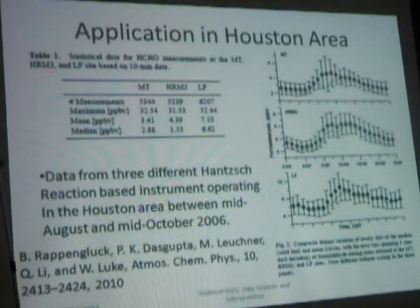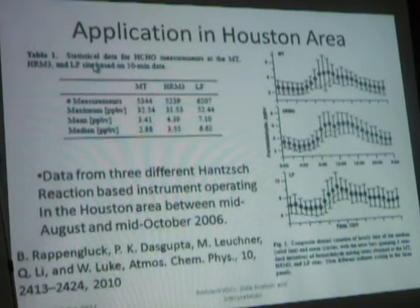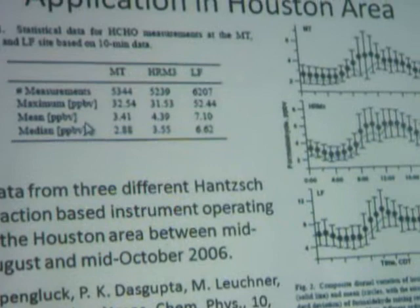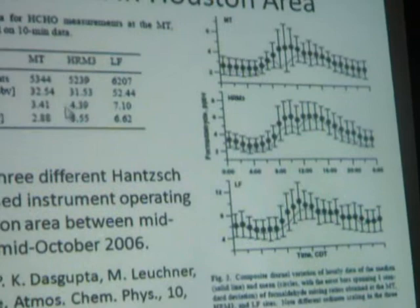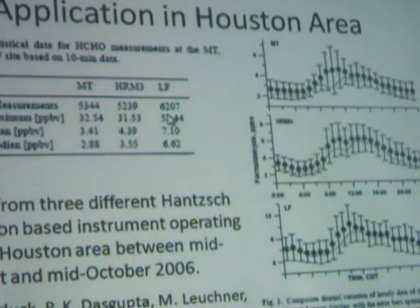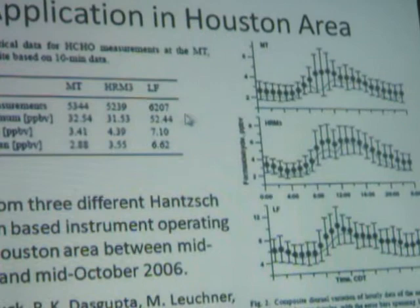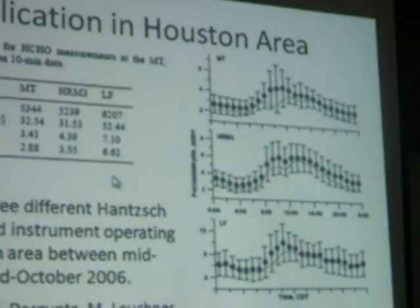This shows an application in the Houston area. These are measurements at three different sites in Houston. The Quimentee site is an urban site, while the other two sites are industrial sites in the Houston area. You can see between five and six thousand data points at each of these sites during the two-month time period. One can measure fairly high concentrations in the three to six parts per billion range.